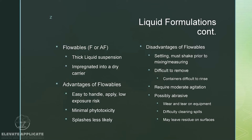Flowables, which go by F or AF, are thick liquid suspensions that impregnate into a dry carrier. Advantages: easy to handle and apply, low exposure risk, minimal phytotoxicity, splashes less likely. Disadvantages: settling — you must shake prior to measuring and mixing; difficult to move; containers can be difficult to rinse; require moderate agitation; can possibly be abrasive causing wear on pumps, hoses, and nozzles; cleaning up spills is difficult; and they can leave a residue-type substance on surfaces.